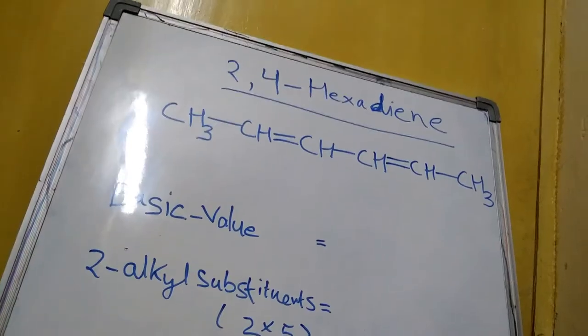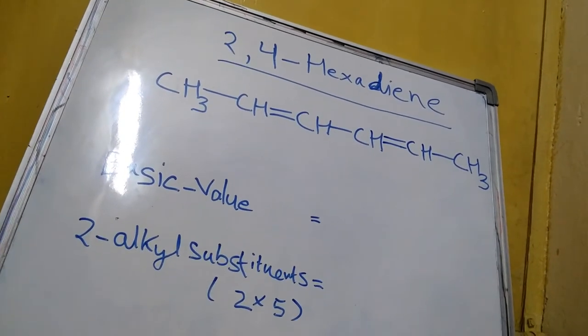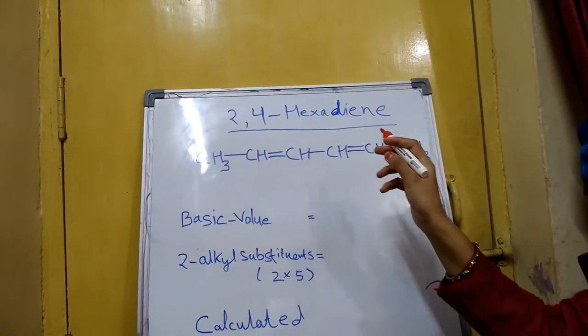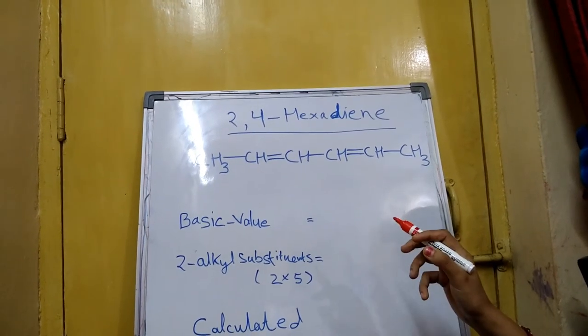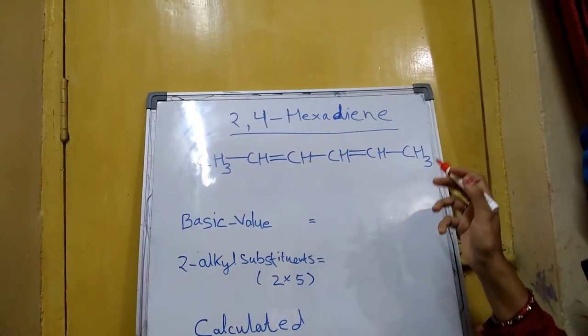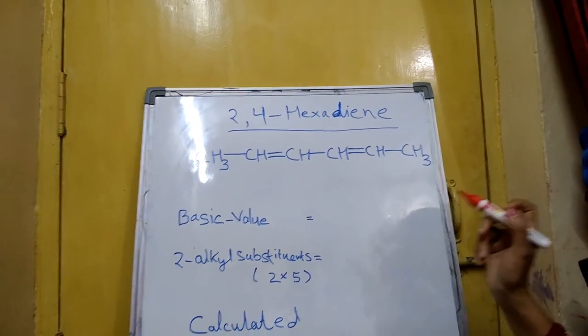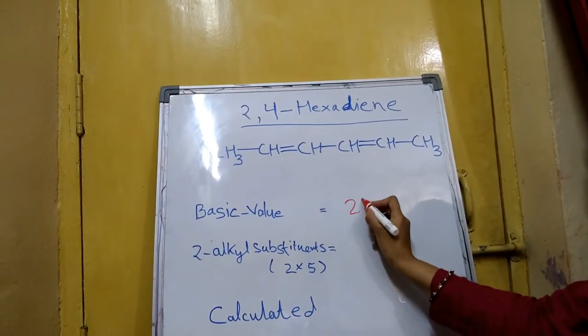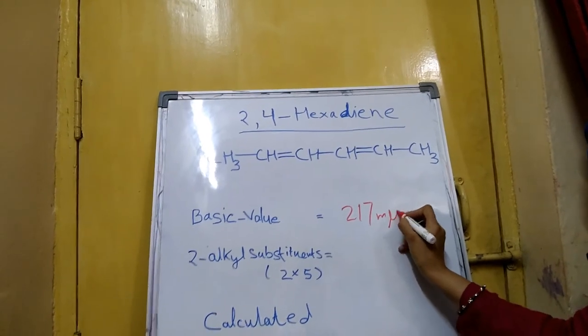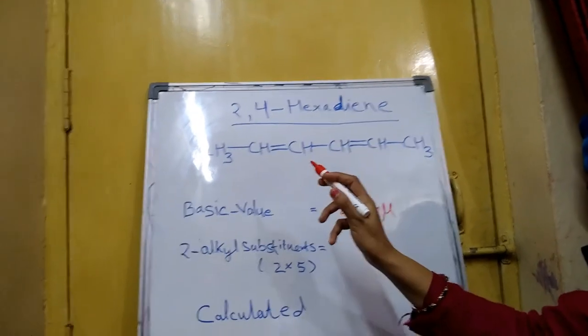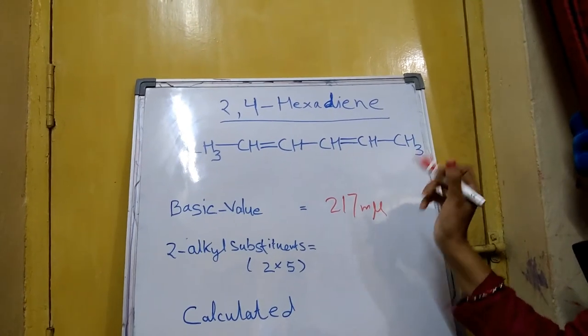The various rules for calculating the absorption maximum in dienes and trienes are summarized in the table below. As an example, let's calculate the absorption maximum in the UV spectrum of 2,4-hexadiene. This is 2,4-hexadiene — the basic unit is a butadiene system with two alkyl groups on each double bond. The basic value from the table is 217 millimicrons.